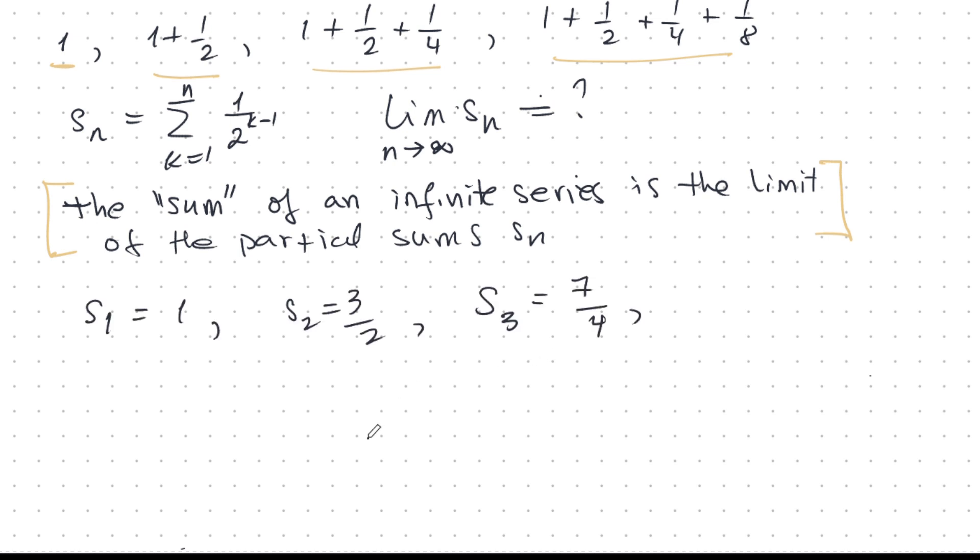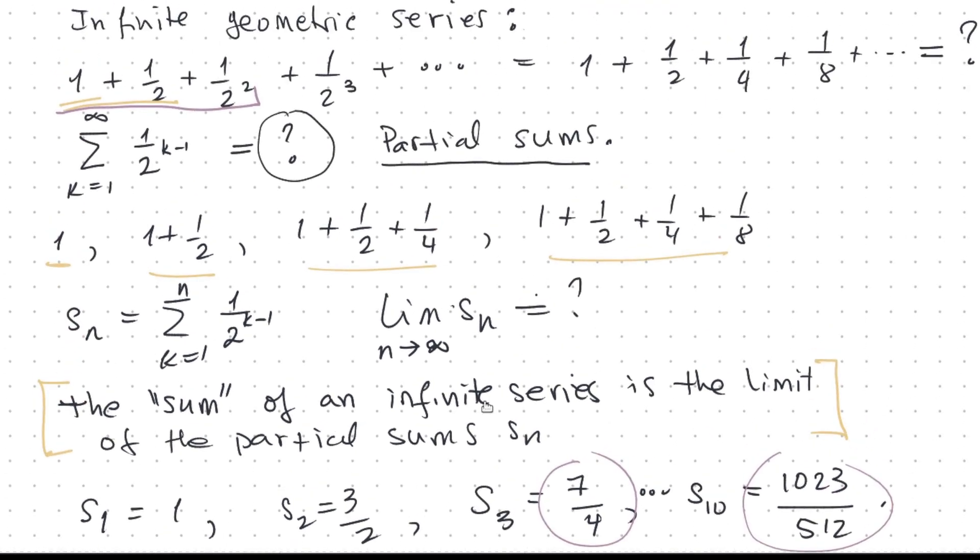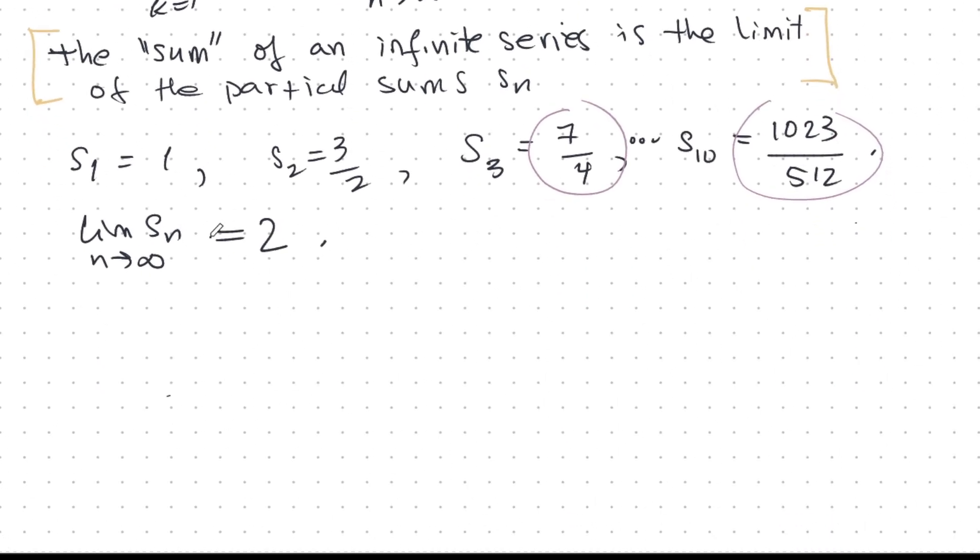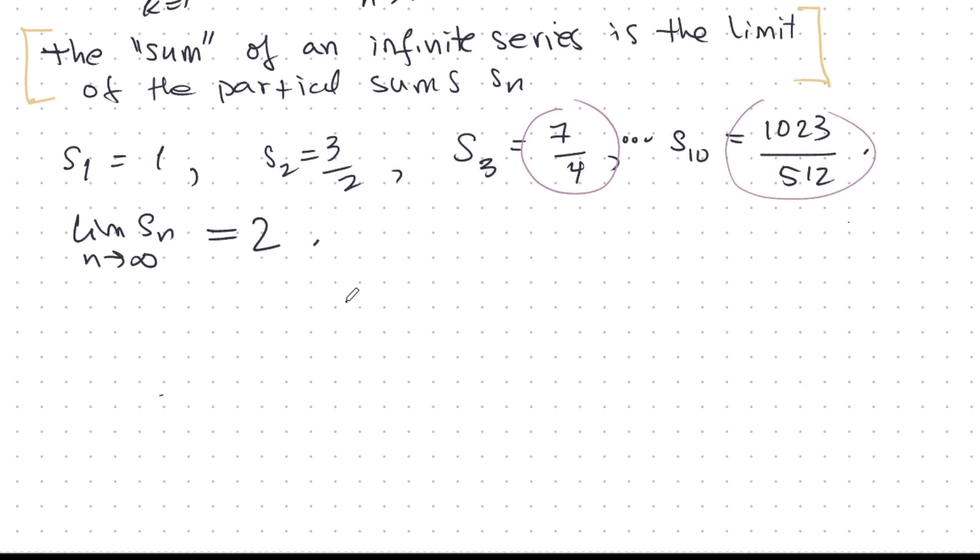So here are the first few. S1 is 1, S2 is 3 halves, S3 is 7 over 4. What is S10? Let's jump up to S10. That's 1023 over 512. Very interesting. So you notice that all of them are less than 2, and they seem to approach 2. This one is getting closer to 2, and this one very close to 2. But as you know from the theory about geometric series, we know that the limit of S_n as n goes to infinity is 2. And that means for our original infinite series, it does have a sum, that sum is 2. So that's what it means to sum an infinite number of terms, the limit of the partial sums.